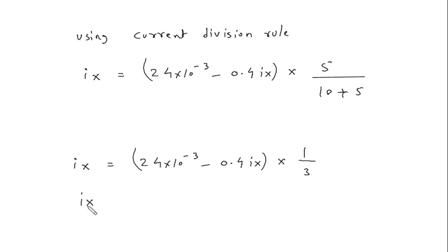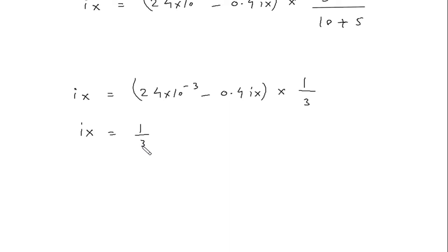So Ix is equal to 1 by 3 into 24 into 10 raised to minus 3 minus 1 by 3 into 0.4 Ix. Rearranging, Ix minus 1 by 3 into 24 into 10 raised to minus 3 plus 1 by 3 into 0.4 Ix equals 0.